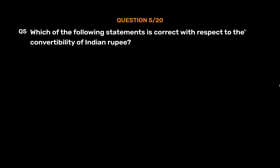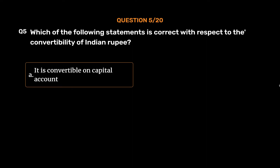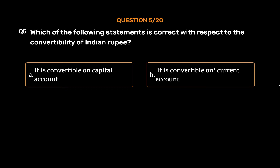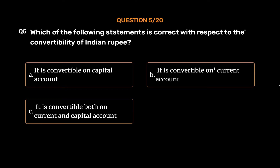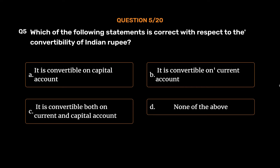Question No. 5: Which of the following statements is correct with respect to the convertibility of the Indian rupee? Option A, It is convertible on capital account; Option B, It is convertible on current account; Option C, It is convertible both on current and capital account; Option D, None of the above. The correct answer is Option C, It is convertible both on current and capital account.